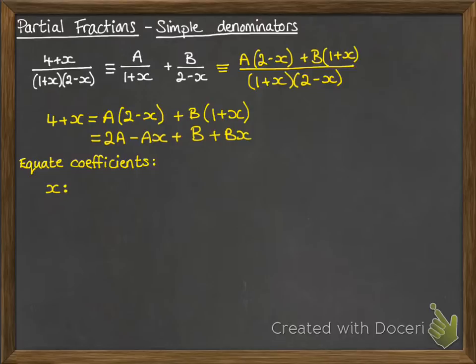So we look at the x terms on both sides, and they have to be equal. So on the left hand side we have a coefficient of 1 with the x, so we don't need to worry about writing the x's, we're just looking at the coefficients of them. And on the right hand side we have a minus A and a B that go with the x's.